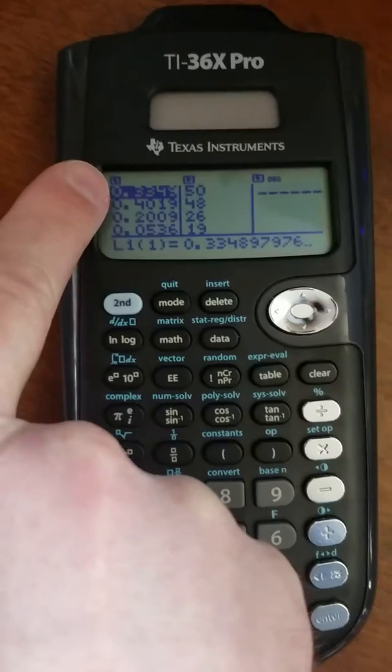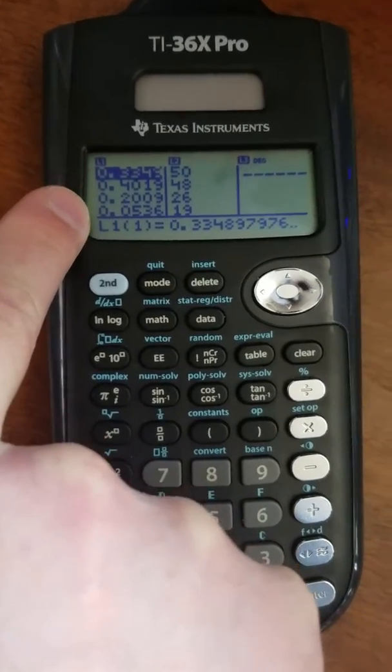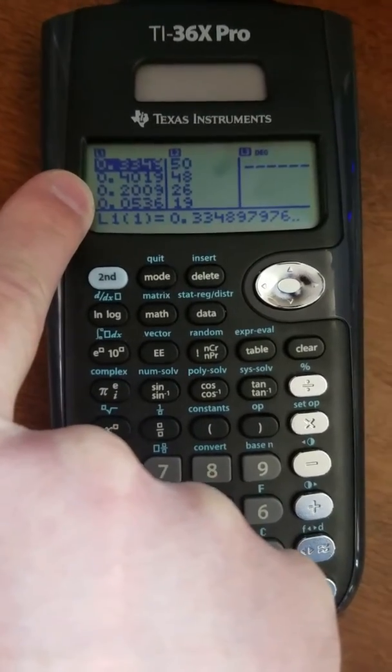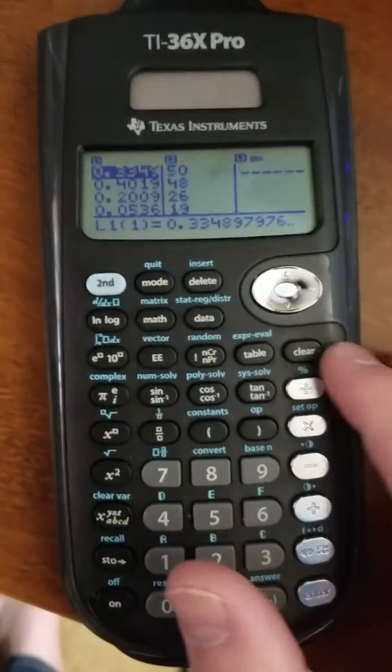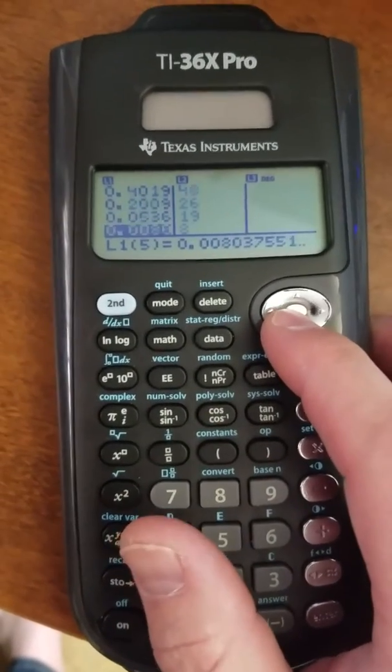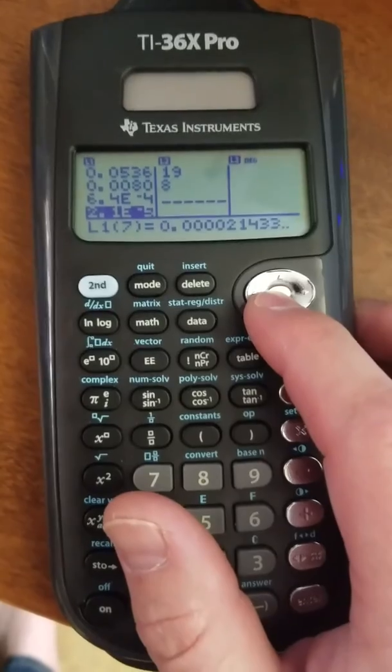And ignore this stuff over in L2. We're talking about just the stuff in L1 here. You can see there's the probability of exactly 0 successes, exactly 1, exactly 2 successes. That's the number we saw before. Exactly 3 successes. And so on. All the way up to exactly 7 successes.